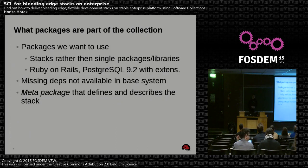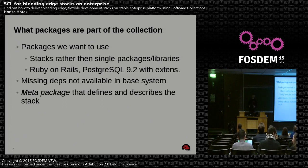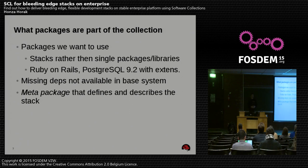Let's see what the principles are. When we talk about software collections, we usually talk about stacks — stacks of packages. We don't usually include one package into the collection; we usually include more. In the case of Ruby on Rails, it would be one software collection. In the case of Postgres, it would be the server and some tools or extensions. Except the packages we really need, sometimes we need dependencies not in the base system — they are in an older incompatible version or are just missing. We include also these missing dependencies into the collection.